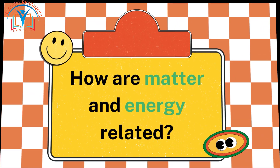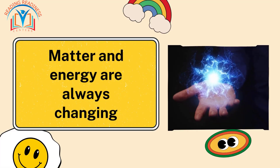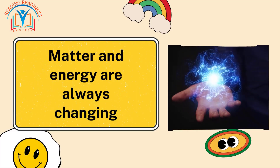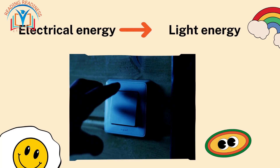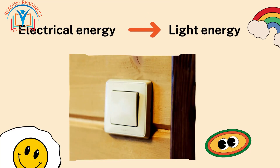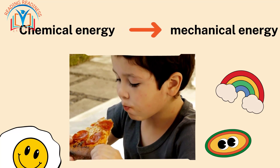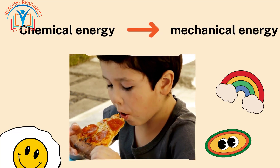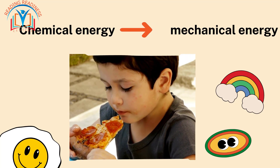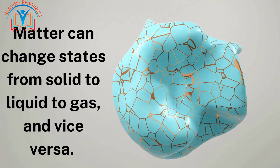How are matter and energy related? Matter and energy are always changing. For example, when you turn on a light switch, electrical energy is converted into light energy. When you eat food, the chemical energy in the food is converted into mechanical energy, which helps you move.